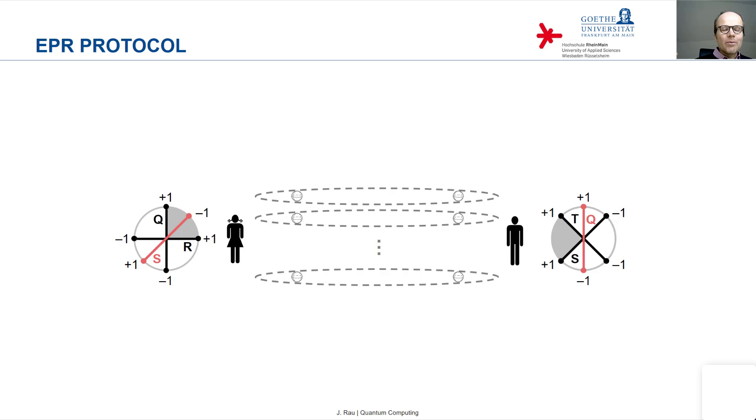The other Bell pairs, where the measurements were different, are used to calculate the expectation value of the observable A that we saw when we discussed Bell's inequality, this particular observable A.